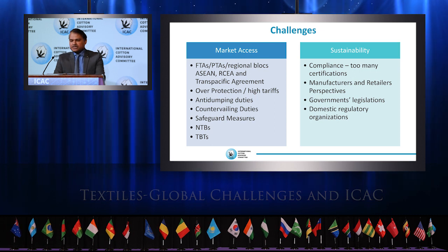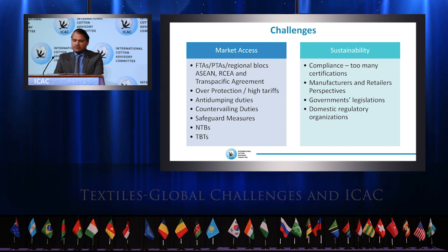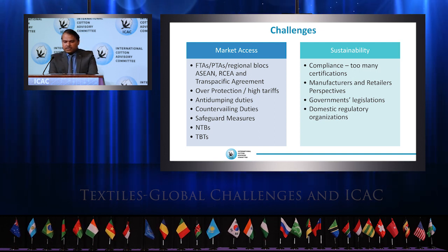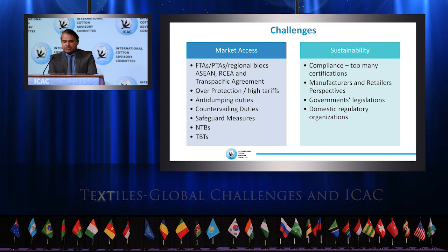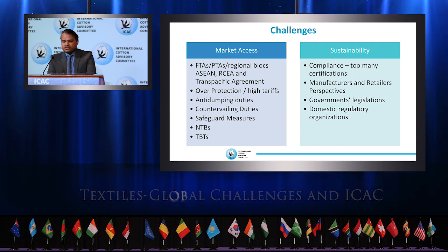Moreover, in many countries the upstream value chain places trade defense measures such as anti-dumping, countervailing, and safeguard duties on their products, putting the downstream industry at a disadvantage. Non-tariff and technical barriers on trade are also placed to protect the domestic industry, restricting trade and preventing the textile value chain from growing as it should for the benefit of consumers and industry.